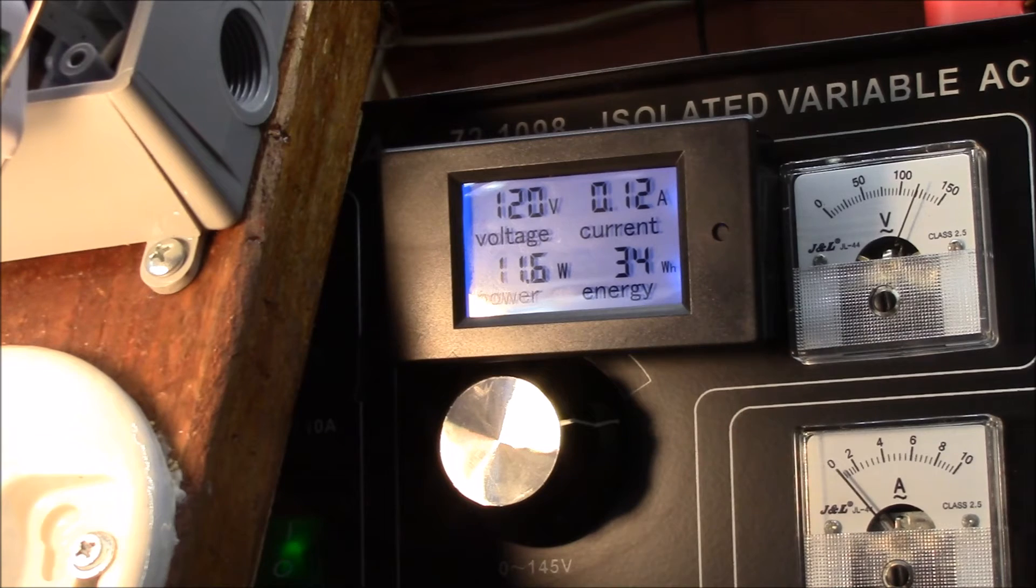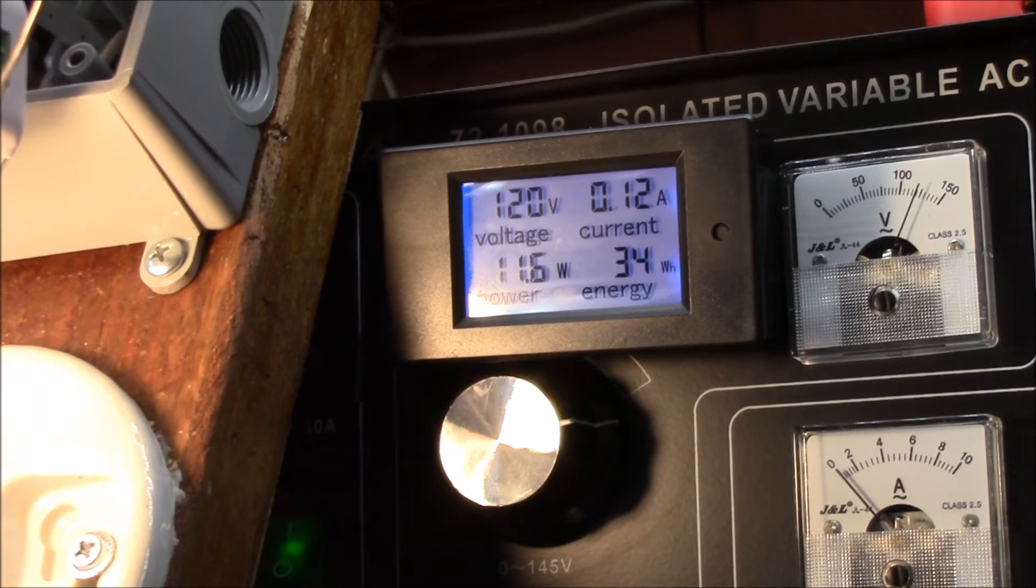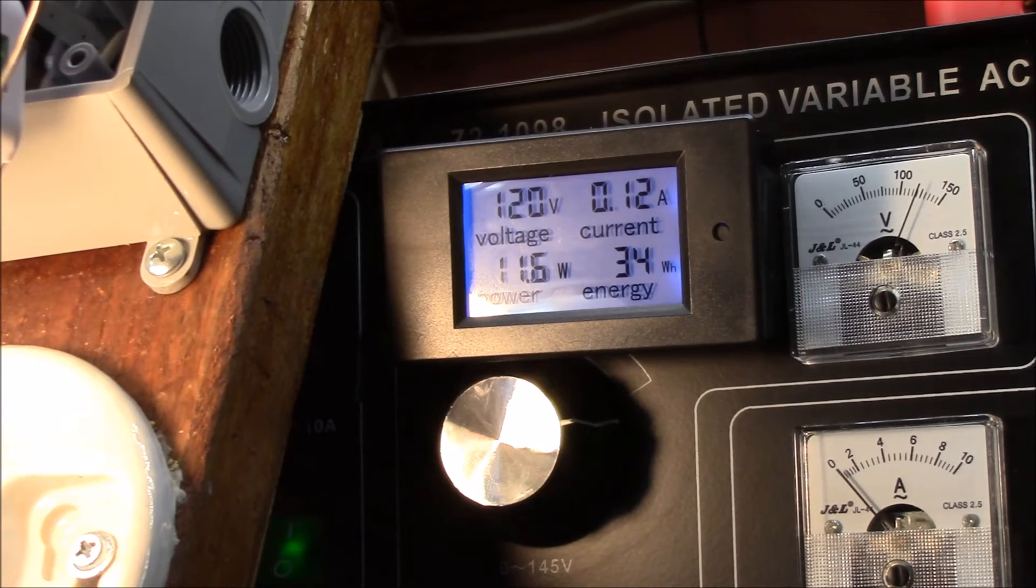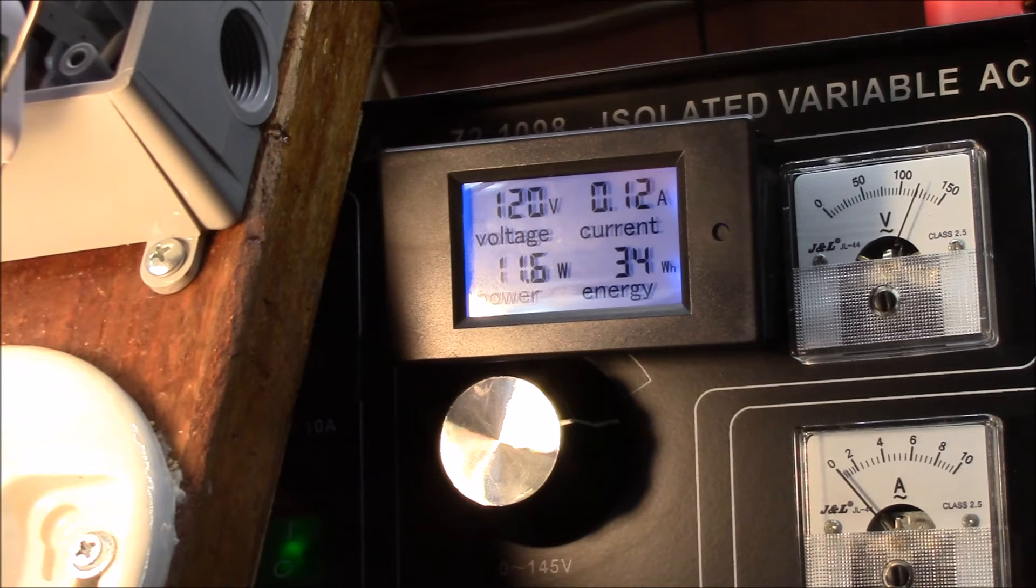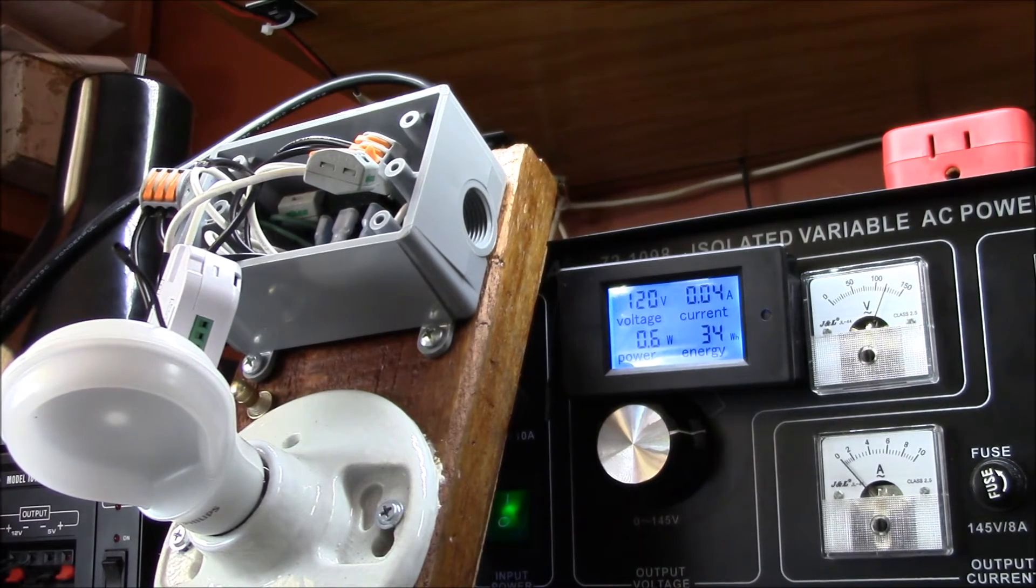So I've turned the dimmer off, I'm powering the light bulb directly with the dimmer off, and the power went down that same roughly quarter of a watt. Let me try one thing here. I'm going to unplug power to the dimmer and we'll see what the power is with just the light bulb only.